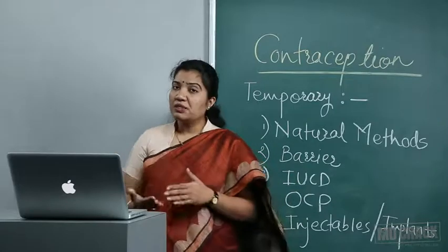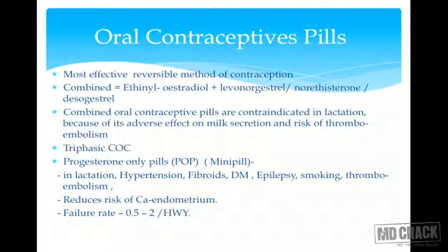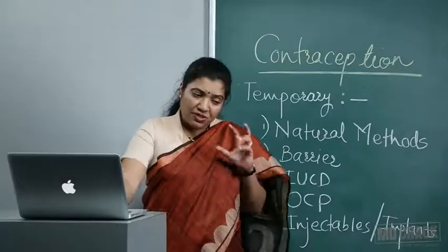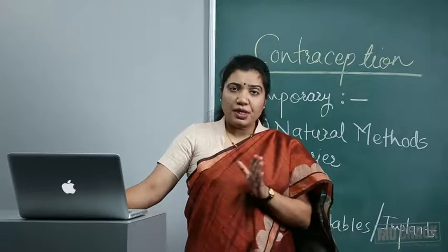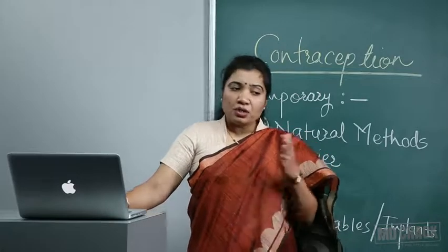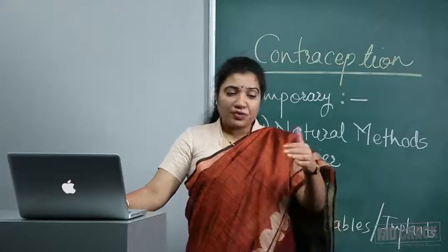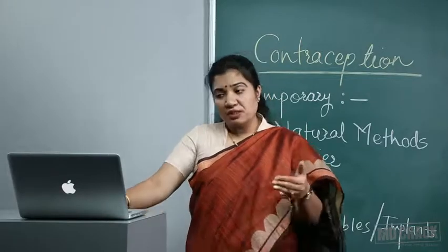Combined oral contraceptive pills are contraindicated in lactation because they adversely affect milk secretion, and there is also a risk of thromboembolism. This is the most effective contraception but not used in lactation — it decreases lactation as well as causes thromboembolic events. If two options are given in an exam, select both.